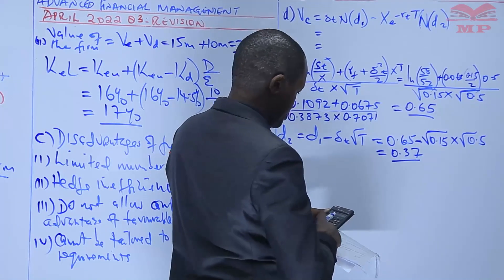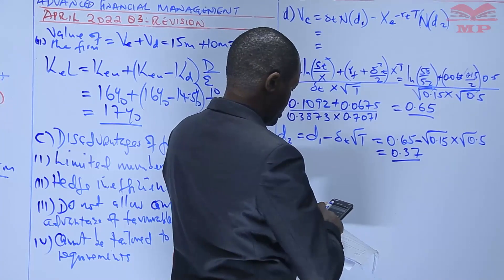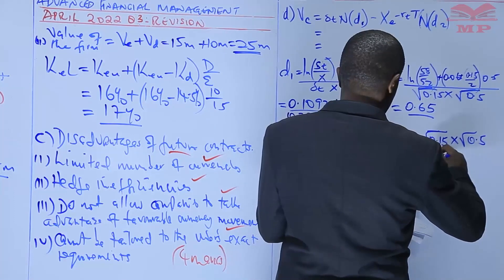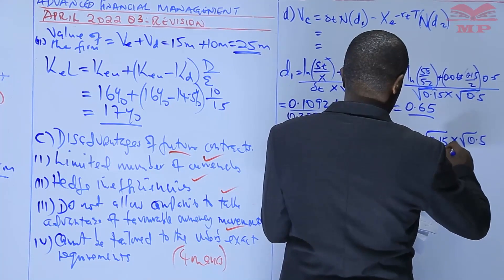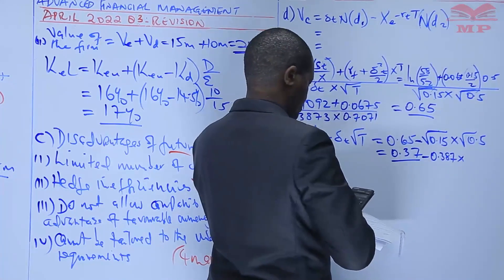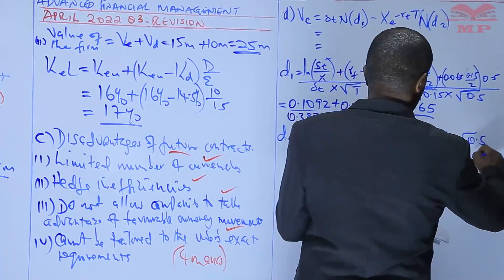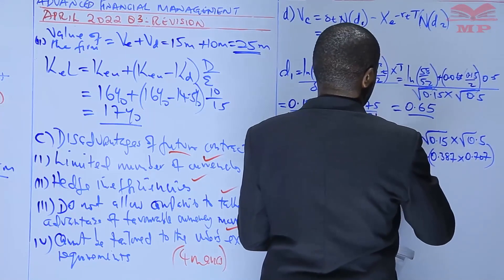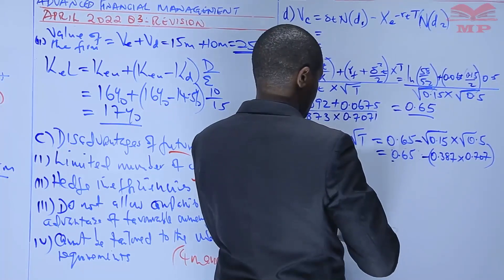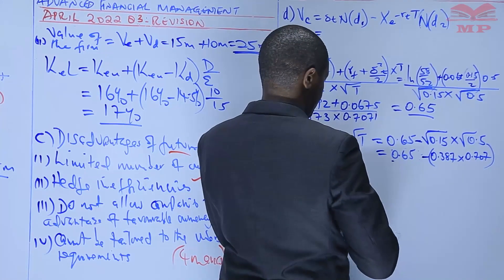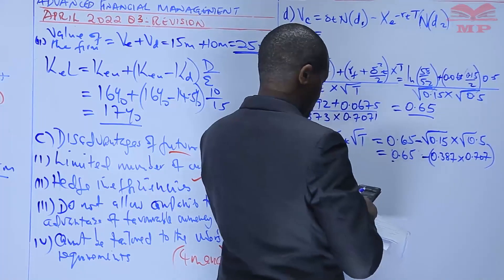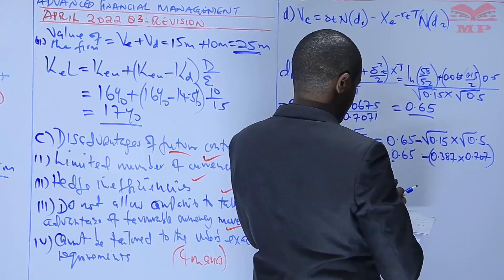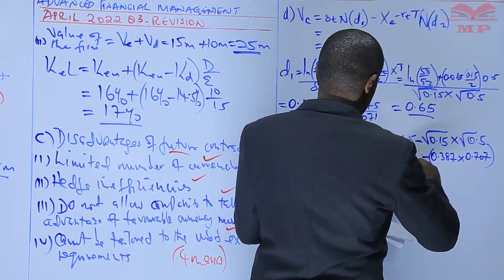Let me take it again to be sure. I have square root of 0.15, which is 0.387, times the square root of 0.5, which is 0.707. So subtracting from D1: 0.65 minus 0.387 times 0.707 is equal to 0.37. That is D2.